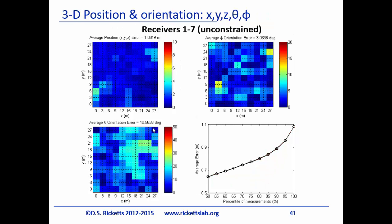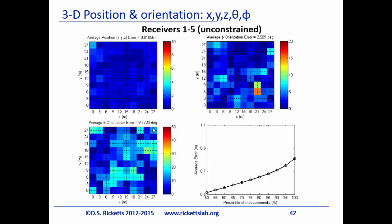We then did full 3D positioning — X, Y, Z, theta, and phi — with seven receivers. Using the same trick of selecting the best five, we reduced the error further. For angular orientation, we achieved about 3 degrees of angular accuracy in one direction and 10 degrees in another. That's pretty remarkable because you can actually track the orientation of the ball as a running back carries it — the ball going up and over and back down.